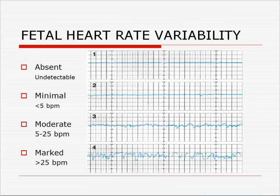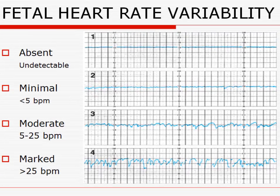This graph demonstrates different amounts of fetal heart rate variability. The fetal heart rate displayed on top is flat and does not vary around the baseline — this is an example of absent variability. The second fetal heart rate shows just a little variation around the baseline, less than 5 beats above and below — this is minimal variability. Moderate variability can be seen in the third fetal heart rate with a variation of 5 to 25 beats around the baseline. Marked variability occurs when substantial variation is seen in relation to the fetal heart rate baseline.